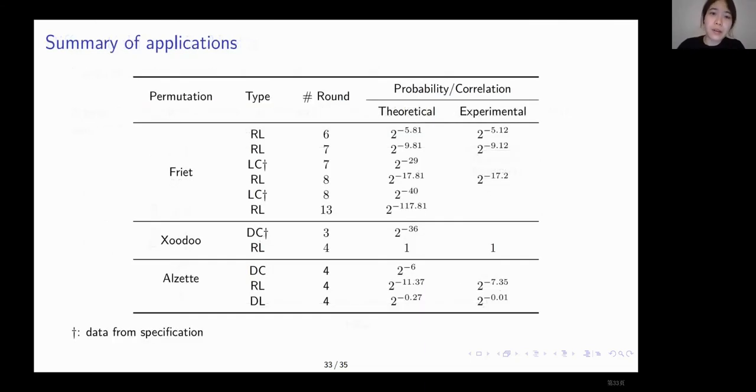And then overall, all our applications can be found here in this table. We found a 13 round rotational differential linear distinguisher for the permutation SPECK, 4 rounds for Xoodoo, and 4 rounds for Alzette. We tested the experimental probability to verify the distinguishers whenever possible. The distinguishers show an advantage over traditional differential or linear distinguishers, either in the number of covered rounds or the probability.